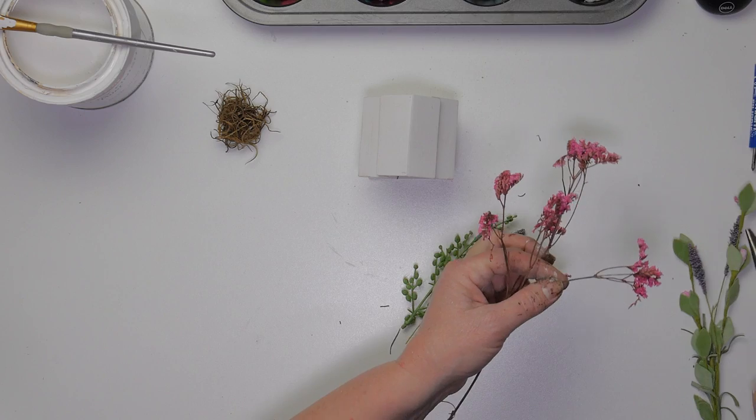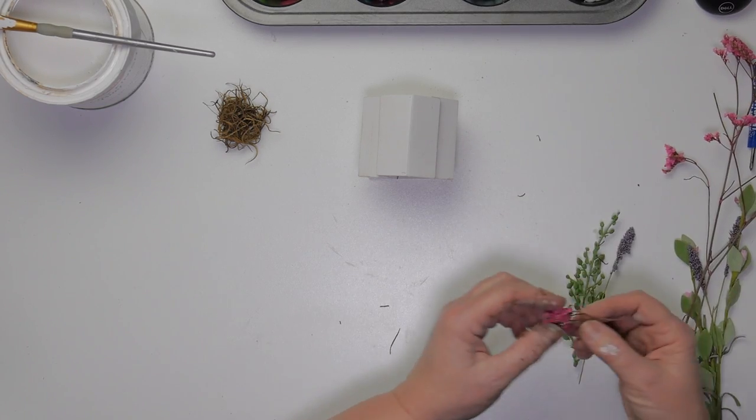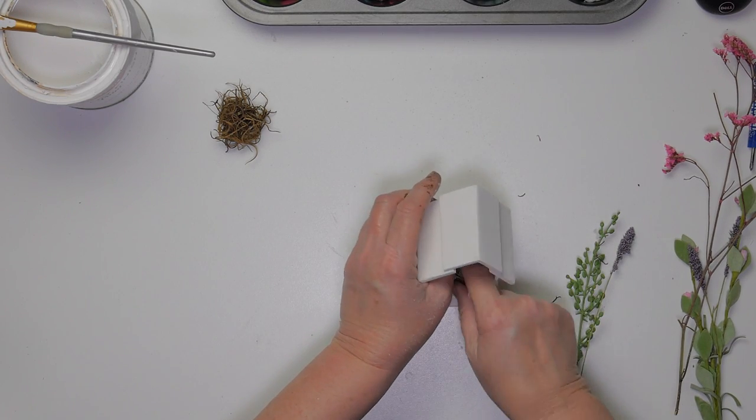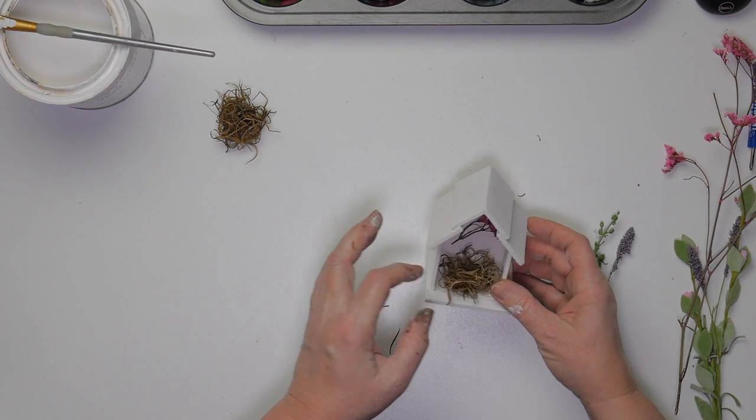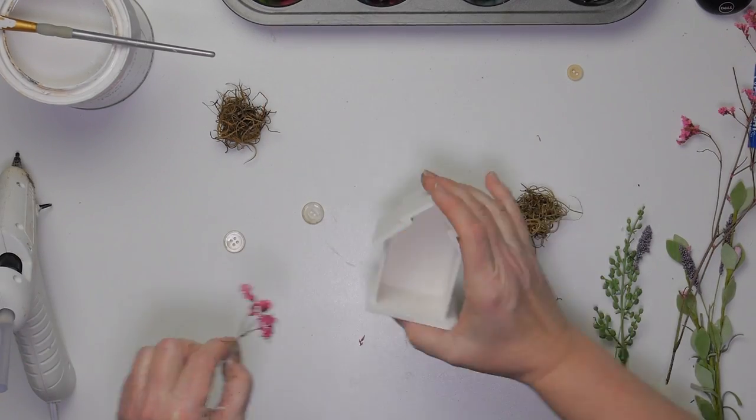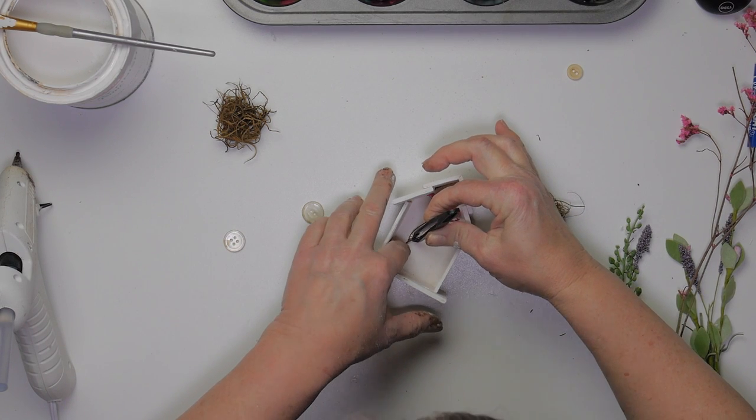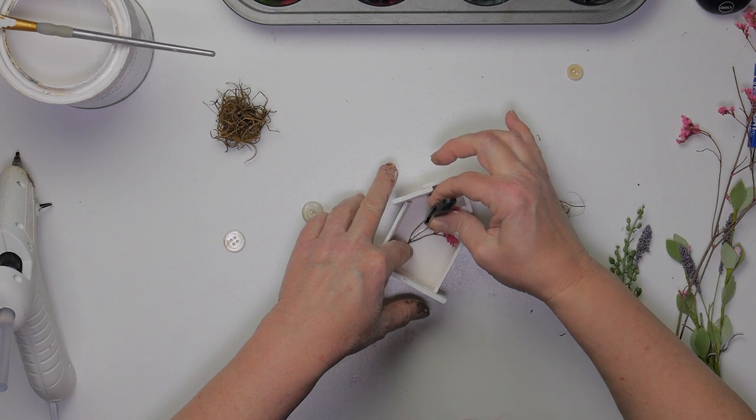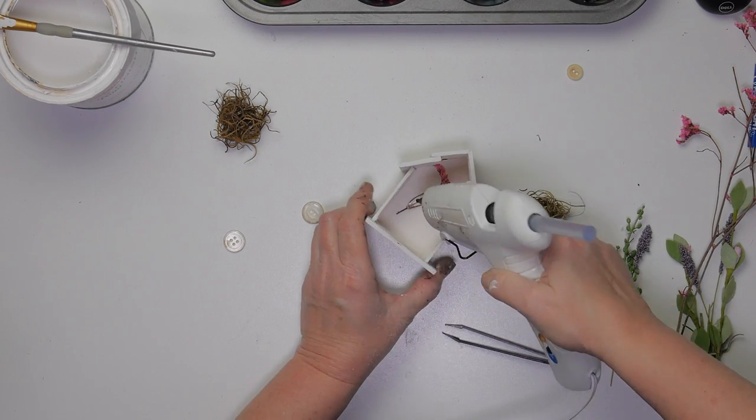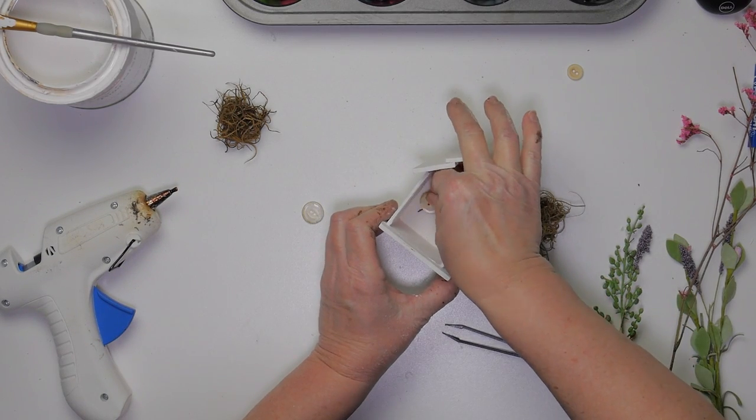I'm going through my flower stash again to pick out what I want to use and then I'll go ahead and glue something inside the birdhouse as well as the outside. I decided to add a few buttons to give the birdhouse a little bit of character.